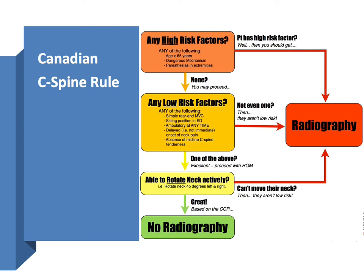The Canadian C-spine rule is a decision-making tool used to determine when radiography should be used in patients following trauma. This is a three-step pathway. First, you check for the presence of high-risk factors: age greater than 65 years, dangerous mechanism of injury, or paresthesias in the extremity. The presence of any of these places the patient at high risk for C-spine injury, and in that case they should get some form of radiography.